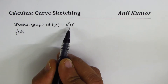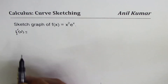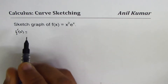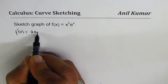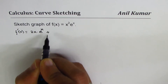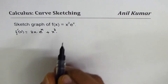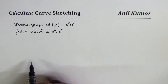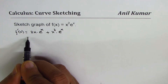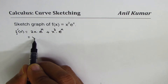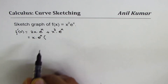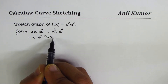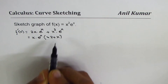f(x) = 2x² · eˣ. The first derivative we can find using the product rule. So the derivative of x² is 2x times eˣ, plus x² times the derivative of eˣ, which is eˣ. Now we can take a common factor of x · eˣ and we get 2 plus x.